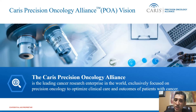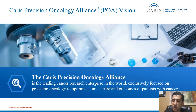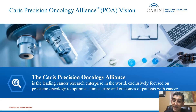What is the vision of the Precision Oncology Alliance as a large network? The Karis Precision Oncology Alliance is the leading cancer research enterprise in the world. The vision is to be exclusively focused on precision oncology to optimize clinical care and outcomes of patients with cancer. This cannot be done without a larger network that takes advantage of the dataset — this is how we leverage capabilities across various institutions through collaboration.